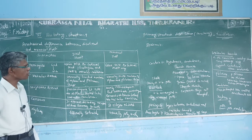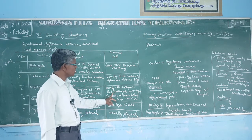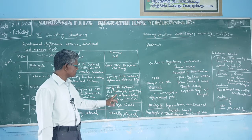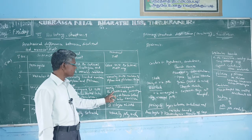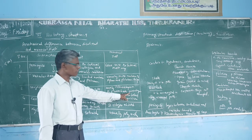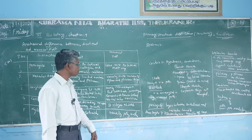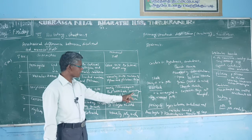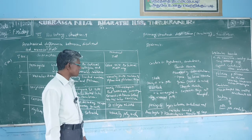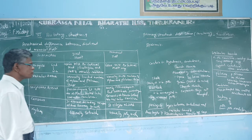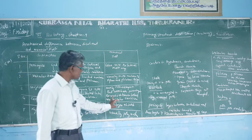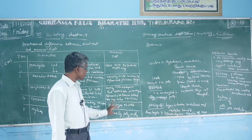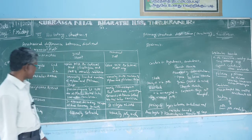In the monocot root, the xylem and phloem are connected mostly by sclerenchyma, and sometimes by parenchyma connective cells. These are never differentiated into vascular cambium — neither parenchyma nor sclerenchyma differentiates into vascular cambium.